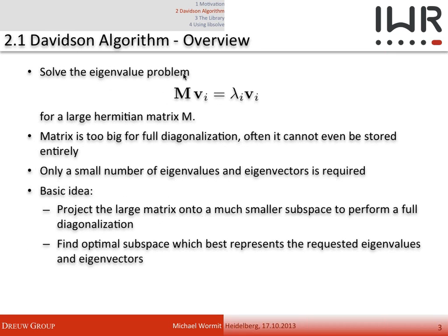Let me give a short overview of Davidson, which I'll use as an example throughout this talk. Davidson is an eigenvalue solver for large Hermitian matrices that are usually too big to store or fully diagonalize. You're typically only interested in a small number of eigenvalues and eigenvectors. The basic idea is to project this big matrix onto a much smaller subspace where you can easily perform a full diagonalization, then iteratively adjust the subspace to find one which best represents the requested eigenvalues and eigenvectors.